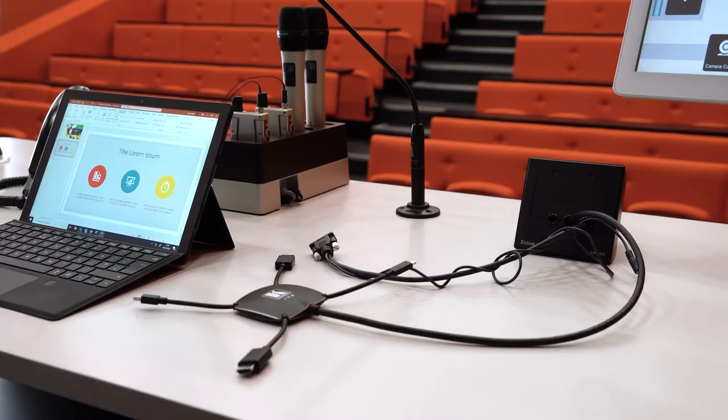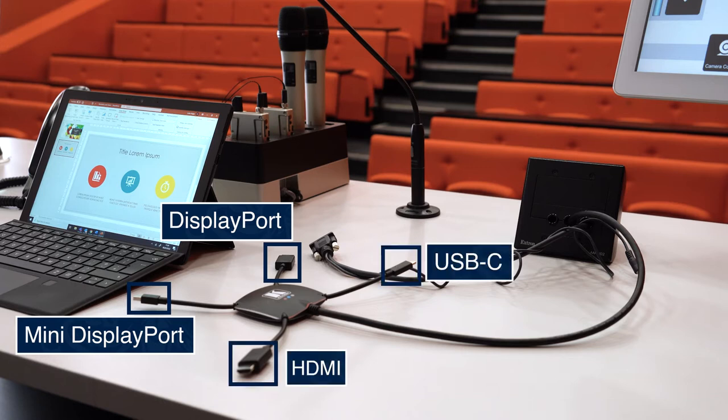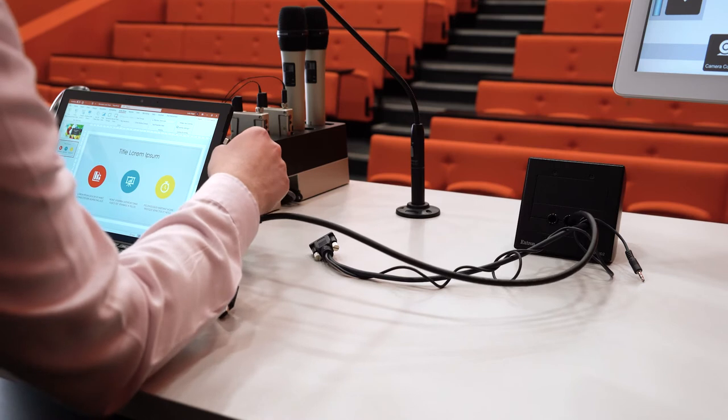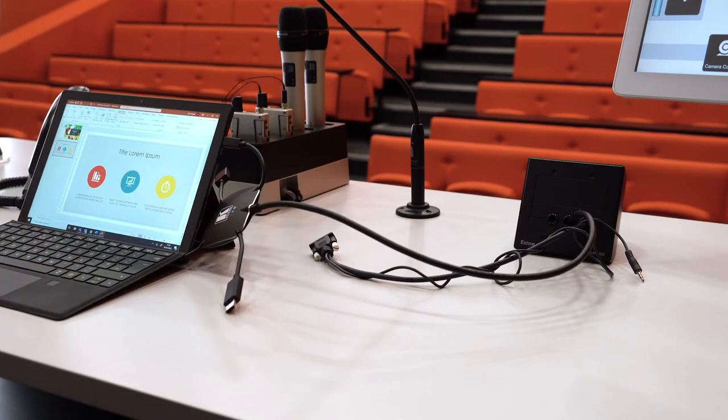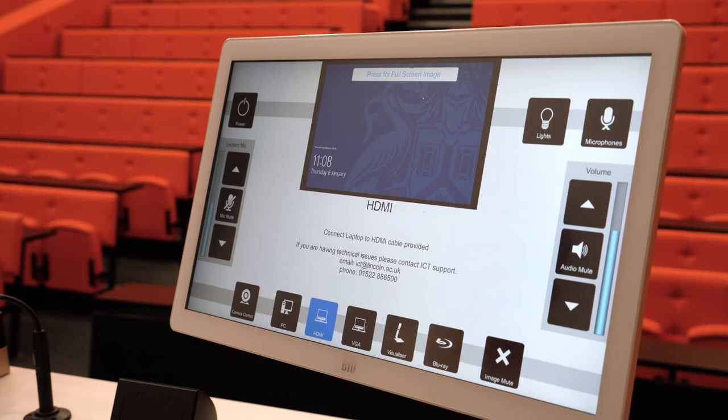The HDMI button will allow you to connect an external device using the spider dongle supplied on the lectern. The dongle contains a range of connectors and depending on the device you want to use you can select the relevant connector — for example standard DisplayPort, mini DisplayPort, HDMI, and USB-C. It's important to remember that regardless of which connector piece your device uses, you will still select HDMI on the control panel.